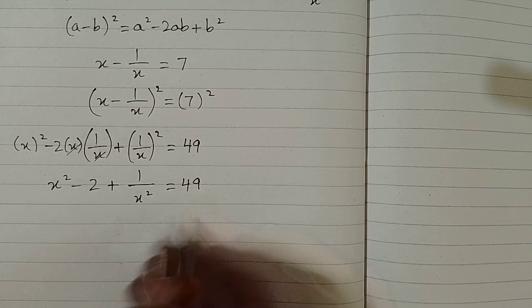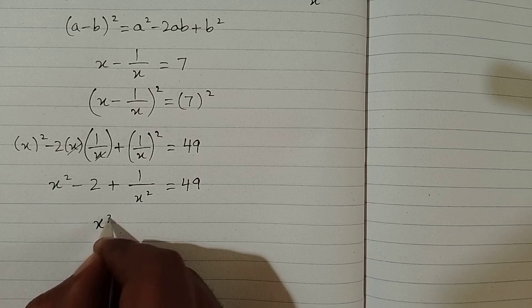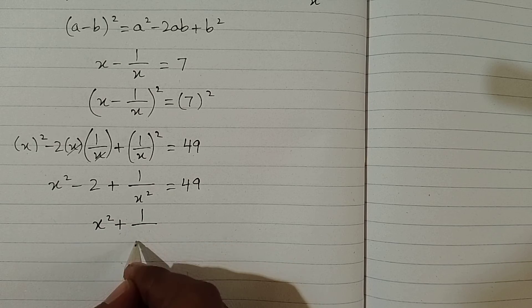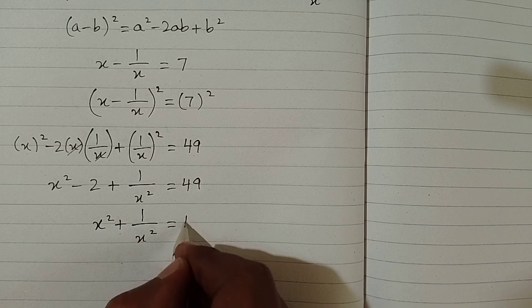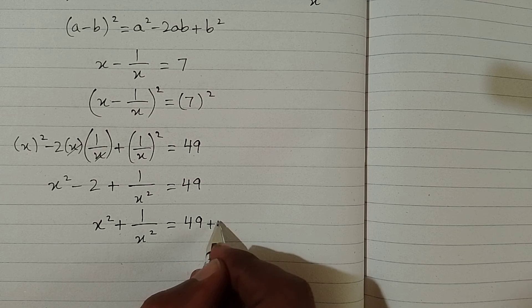Now we can take this minus 2 on this side of equation. So we have x square plus 1 upon x square is equal to 49 plus 2.